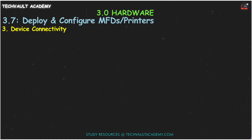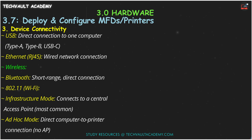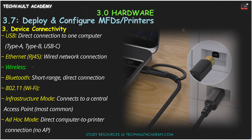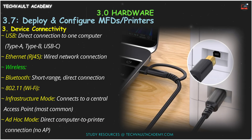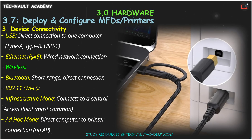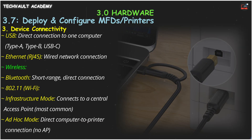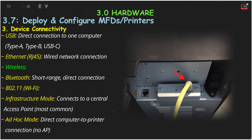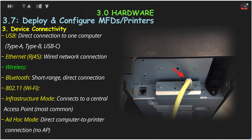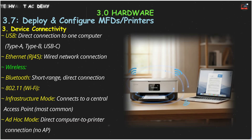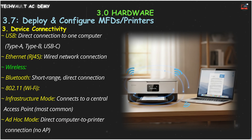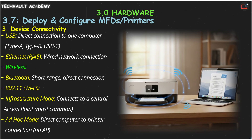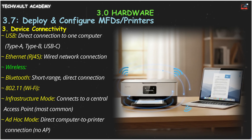Now let's look at device connectivity. You can connect directly to a single computer with a USB cable. For network access, you'll use an Ethernet cable with an RJ45 connector, or you can go wireless. Bluetooth is an option for very short-range printing.